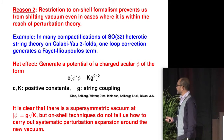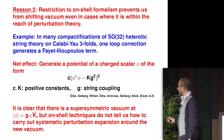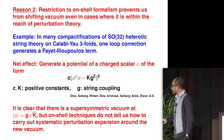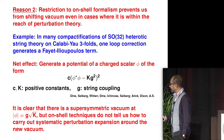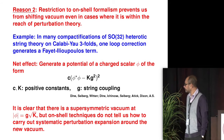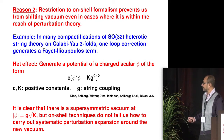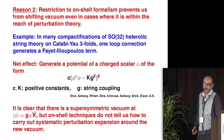Here is the second reason why we want to construct off-shell Green's functions: the restriction to an on-shell formalism prevents us from shifting the vacuum, even in cases where it's within the reach of perturbation theory. A simple example I studied in the late 80s but was never fully resolved: in many compactifications of heterotic string theory on Calabi-Yau threefolds, a one-loop correction generates a Fayet-Iliopoulos term for a U(1) gauge field, which generates a potential for a charged scalar phi. There is a nearby supersymmetric minimum, but on-shell techniques do not tell us how to carry out a systematic perturbation expansion around a new vacuum. An off-shell formalism would surely help in this case.